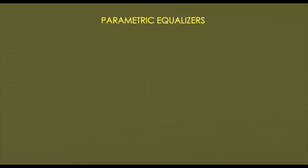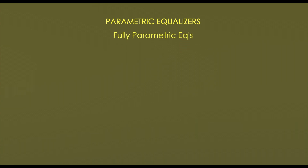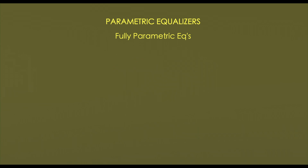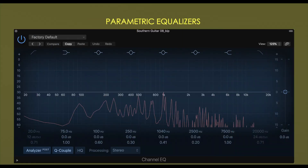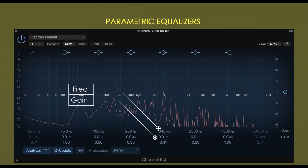The next type is parametric equalizers. In parametric equalizers, there are two options: fully parametric and semi-parametric. Semi-parametric also includes quasi-parametric equalizers. Fully parametric equalizers are the most frequently used in music and audio production. They have three parameters: selectable frequency, gain, and bandwidth.